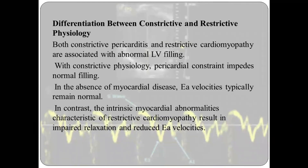Another application is differentiating between constrictive and restrictive physiology. Both constrictive pericarditis and restrictive cardiomyopathy present with abnormal LV filling. With constrictive physiology, the pericardial constraint impedes normal filling but, in the absence of myocardial disease, E' velocities typically remain normal. In contrast, the myocardial abnormalities seen in restrictive cardiomyopathy result in impaired relaxation and reduced E' velocities.